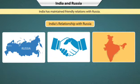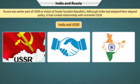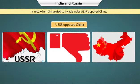Let's know about India's relationship with Russia. Since India's independence in 1947, India has maintained friendly relations with Russia. Russia was earlier part of USSR, i.e., Union of Soviet Socialist Republics. Although India had adopted a non-aligned policy, it has had a cordial relationship with the erstwhile USSR. There was an exchange in various fields including economics and politics. When China tried to invade India in 1962, USSR opposed this unwelcome move.